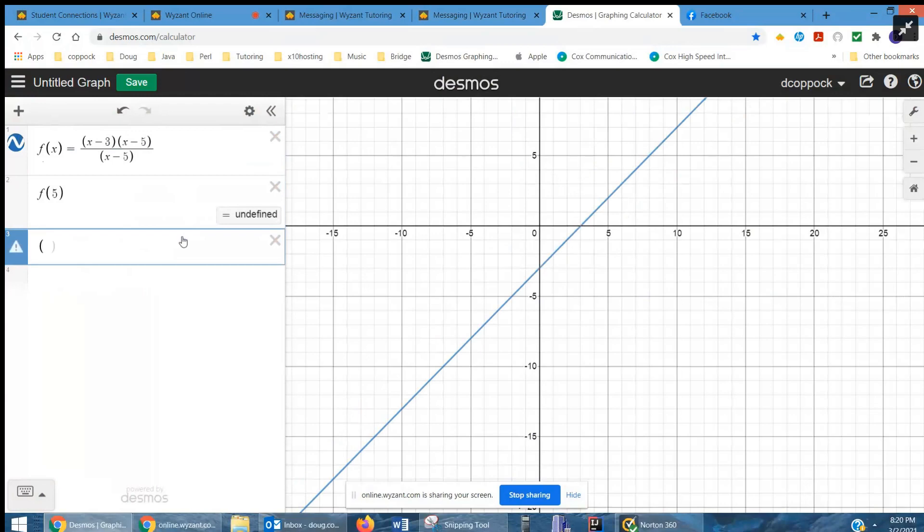I can plot the point 5 comma, now how do I know what the y coordinate of the hole will be? Well, if I ignore the x minus 5s and just picture putting a 5 right here, 5 minus 3 is 2. And if I want to, I can show where that point is with a hole. There's the hole. Now that position is going to change as we add additional conditions to the function.